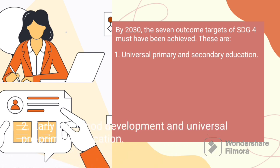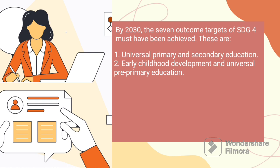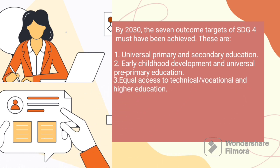Number two is early childhood development and universal pre-primary education. This ensures that all boys and girls have access to quality early childhood development, care, and pre-primary education so that they are ready for primary education. Number three is equal access to technical or vocational and higher education. This ensures equal access for all women and men to affordable and quality technical, vocational, and tertiary education, including university.